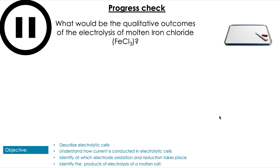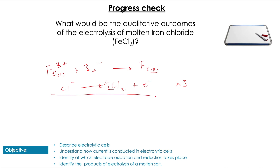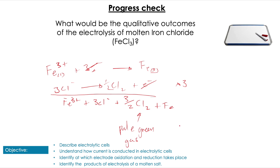Last question: what would be the qualitative outcomes of the electrolysis of iron(III) chloride? Going through our four steps: iron chloride gives Fe³⁺ ions reduced to Fe solid at the cathode, and chloride ions oxidized to chlorine gas at the anode. We multiply the chloride half equation by three to balance the electrons. Qualitatively: at the anode we form a pale green gas — chlorine — and at the cathode a silvery solid — iron metal.